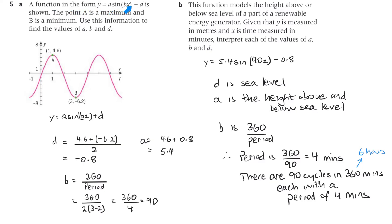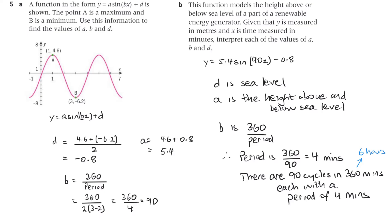A function in the form y equals a sine bx plus d is shown; point A is a maximum and B is a minimum. Use this information to find the values of a, b, and d. d is the midpoint between 4.6 and minus 6.2, so that's 4.6 plus minus 6.2 divided by 2, which equals minus 0.8. Now a is the distance from the peak to the centre line: 4.6 plus 0.8 gives us 5.4.